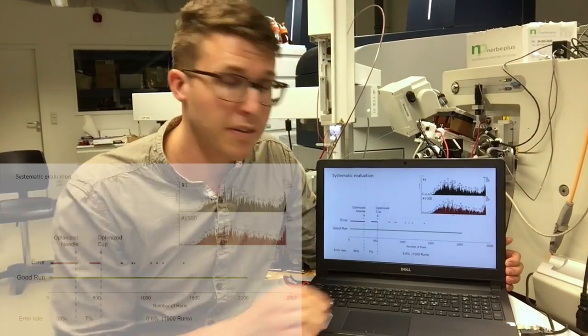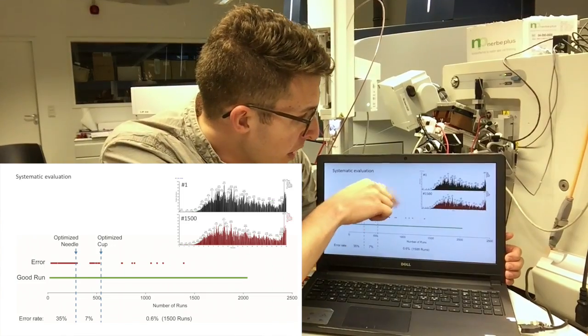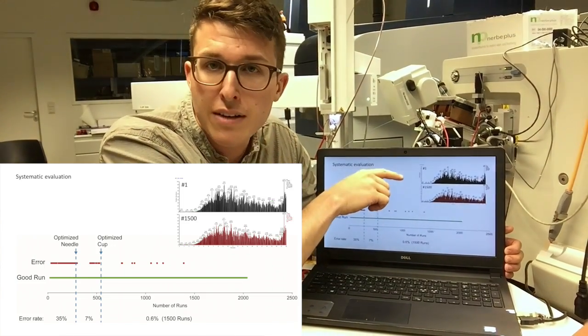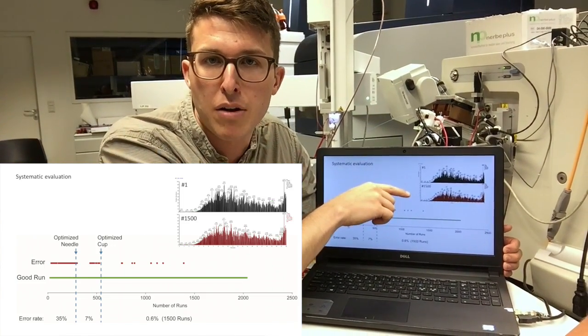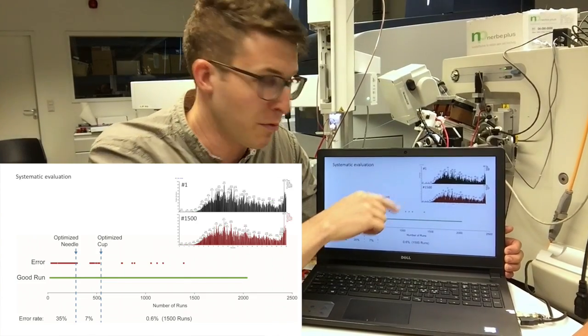And we are still analyzing the data. But as you can see here, the run number 1 looks exactly the same like the run number 5,500.